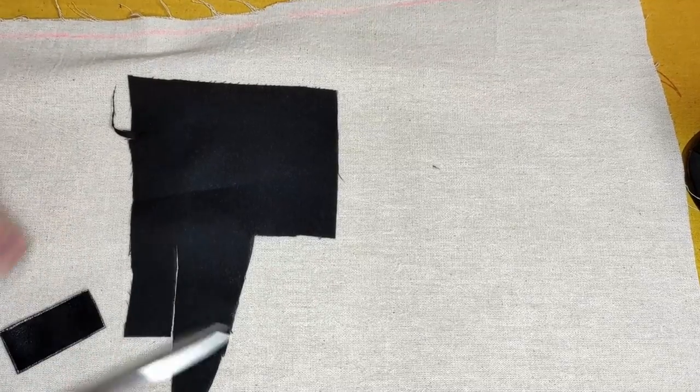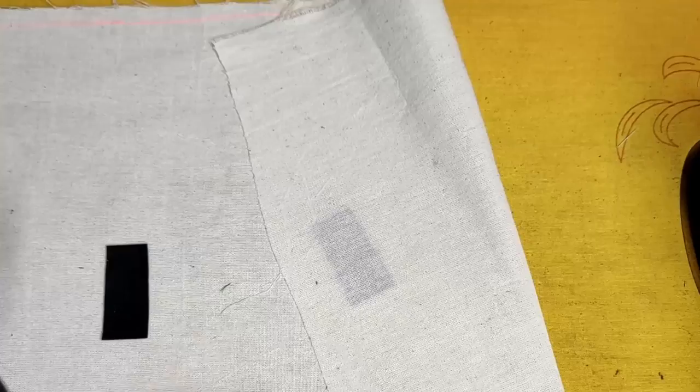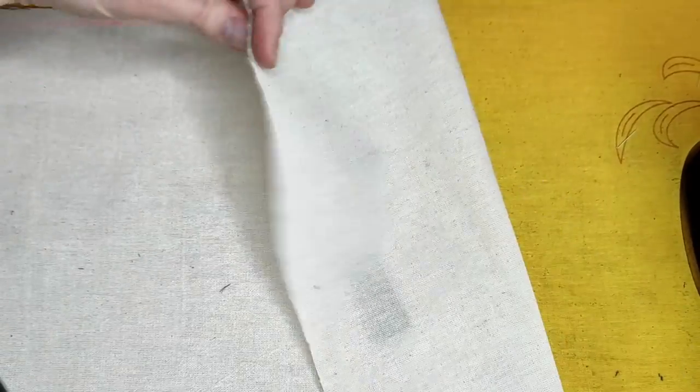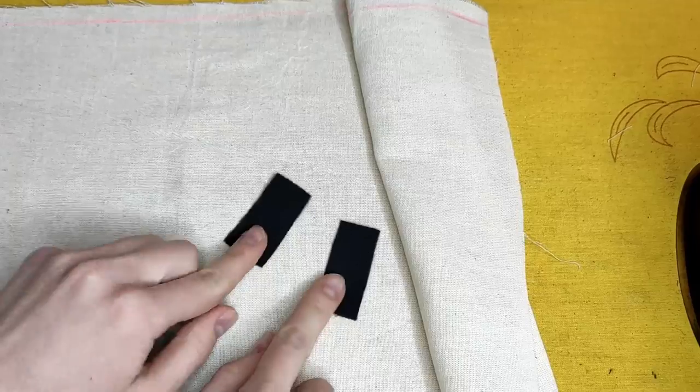What we need to do next is interface our welts. After that, we need to fold them in half and iron them.